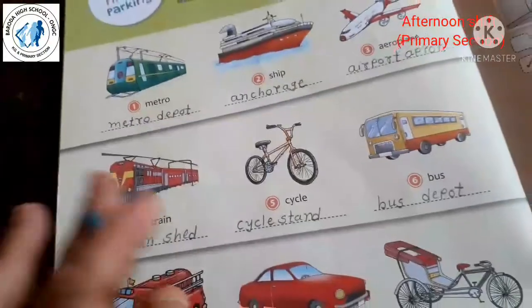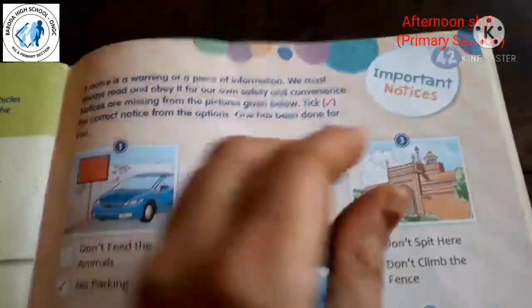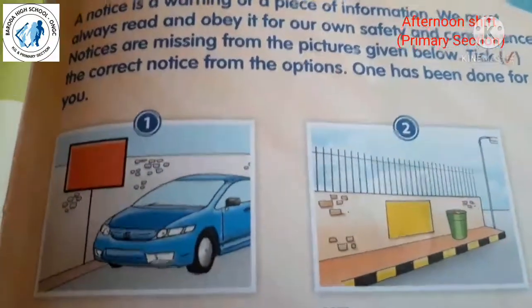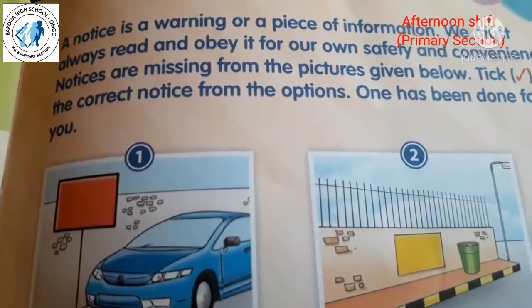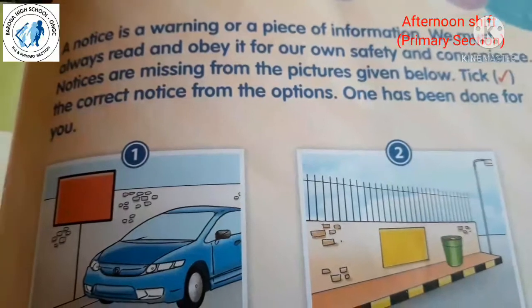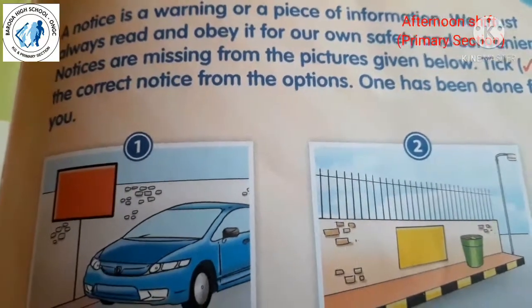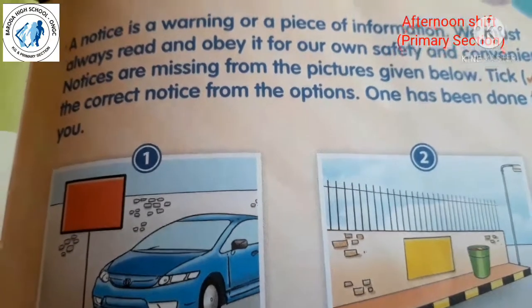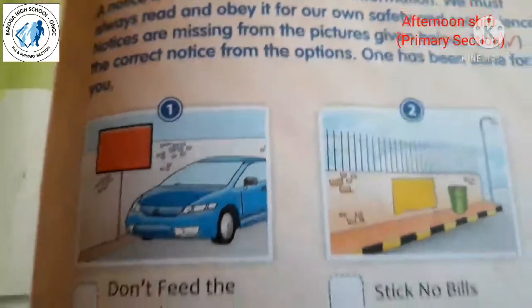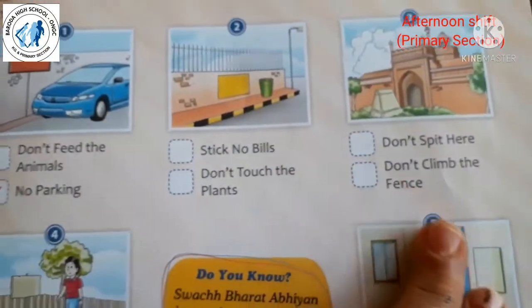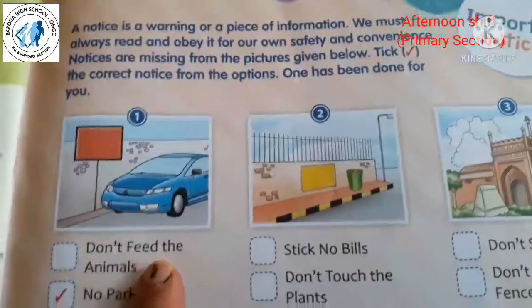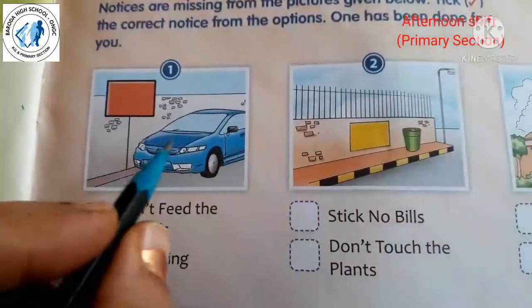Lesson number 42 on page number 47: 'Important Notices'. At many places we can see different types of notices on boards. A notice is a warning or a piece of information — we must always read and obey it for our own safety and convenience. Notices are missing from the pictures given below; tick the correct notice from the options. One has been done for you.